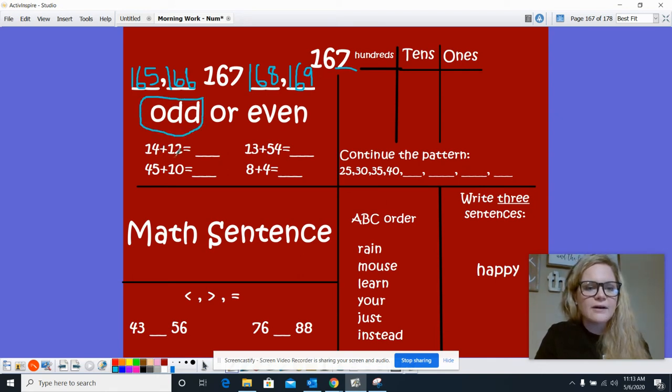14 plus 12. Let's look at those ones place first. 4 plus 2 equals 6 for our ones place and for our tens place we have 1 plus 1. Well 1 plus 1 is 2. So we know 14 plus 12 is 26.